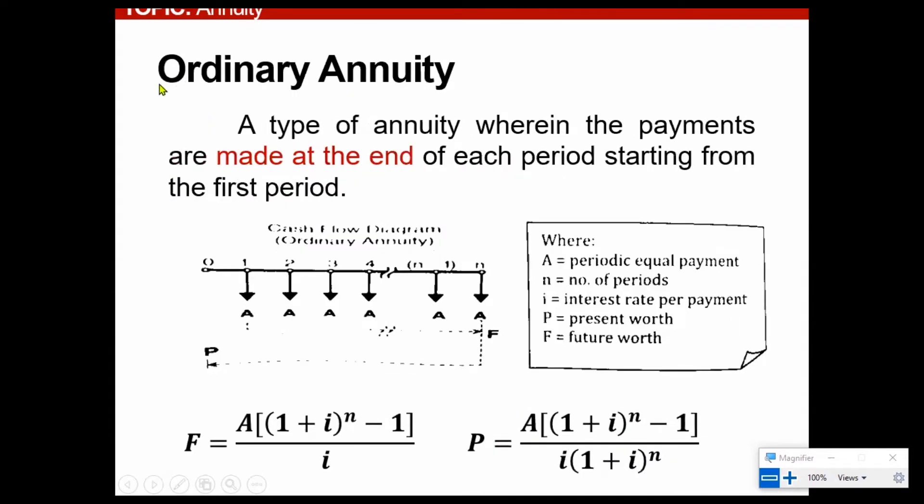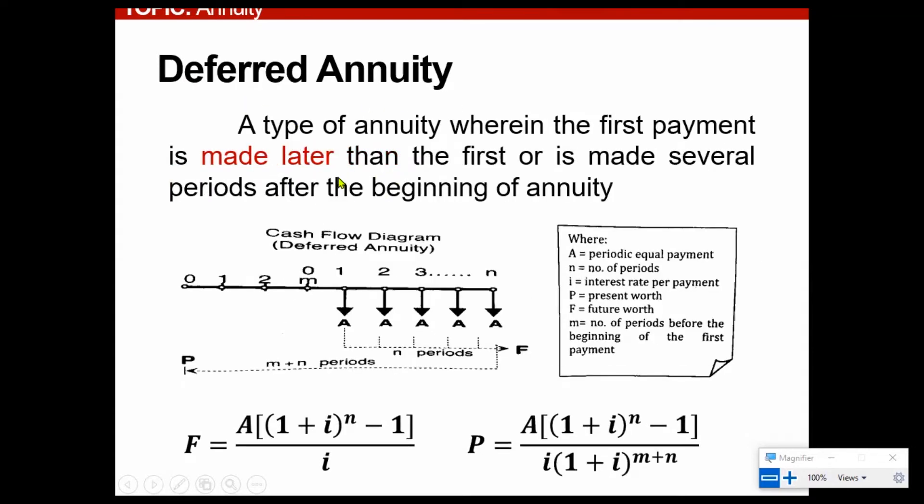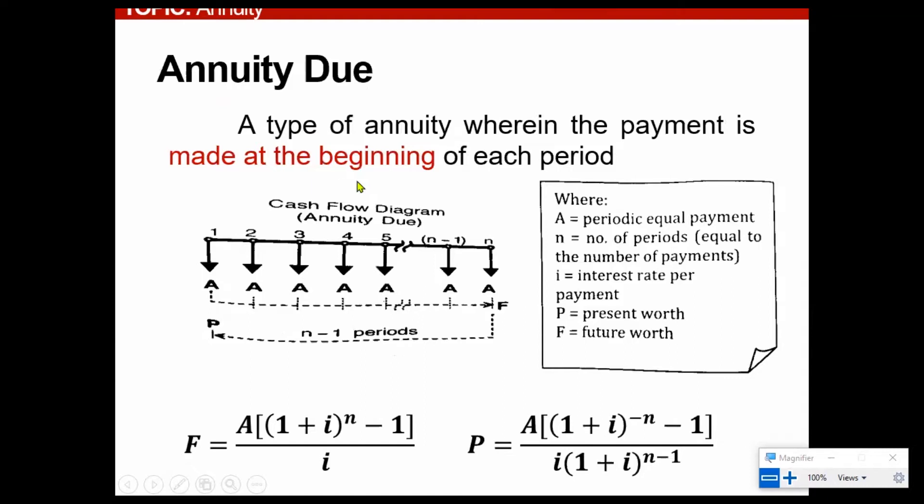So again, the concept of ordinary annuity is made at the end, deferred is made later, annuity due is made at the beginning.